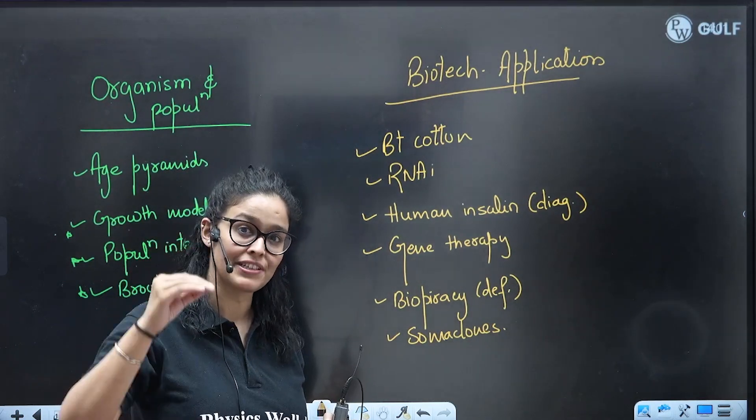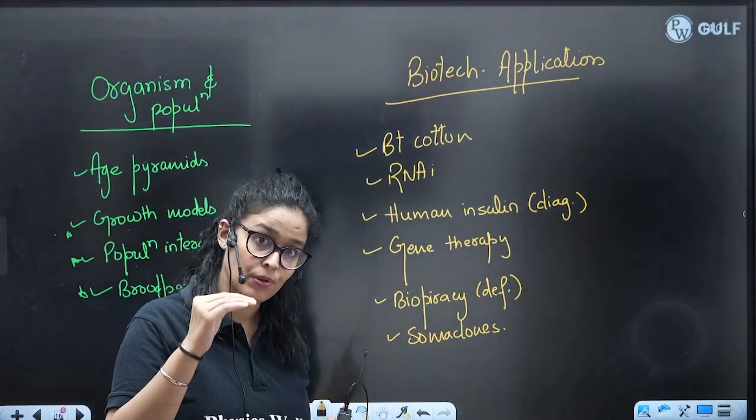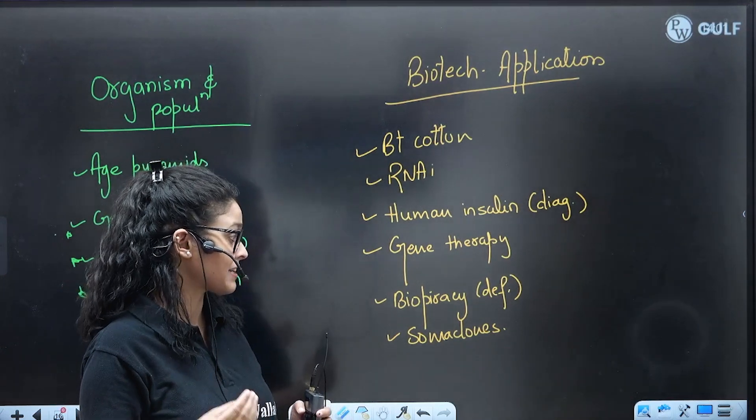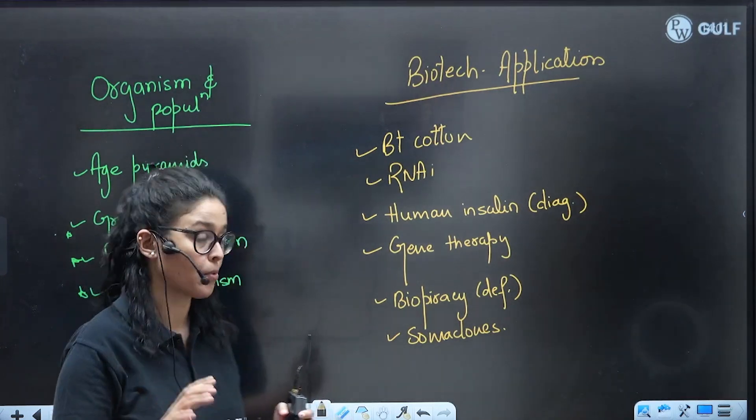Humulin is genetically engineered insulin, so you have to write down all the steps about it. Gene therapy, biopiracy definition, and somaclones - important topics.